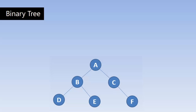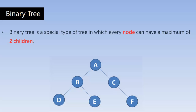Binary means having two. So here in this tree, every node has a maximum of two children. Binary tree is a special type of tree in which every node can have a maximum of two children. If you observe this diagram, the node A, which is the root node, has got two children, namely B and C. B has got two as well, D and E. But node C has got just one child. Any node can have a maximum of two children, but not more than two. If any node has more than two children, it won't be a binary tree at all.